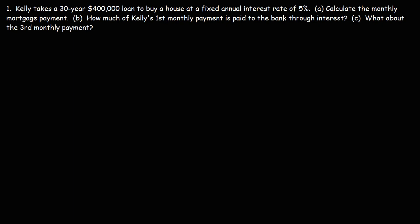Let's say you have a mortgage with a monthly payment of $2,000. Have you ever wondered how much of that goes into paying interest and how much goes into paying down the principal or the loan balance? In this video, we're going to talk about how to calculate those things through an example problem. Kelly takes a 30-year, $400,000 loan to buy a house at a fixed annual interest rate of 5%. Calculate the monthly mortgage payments.